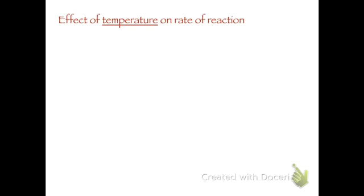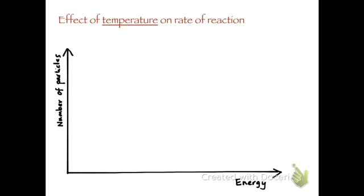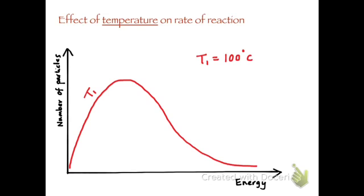Now let's look at a change of temperature and how that affects the Maxwell-Boltzmann distribution, and what the effect is on rates of reaction. Drawing our standard Maxwell-Boltzmann distribution at 100 degrees Celsius, and showing the activation energy, the particles represented by the area under the red curve to the right of activation energy are those that can react.